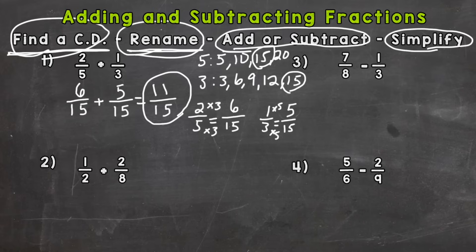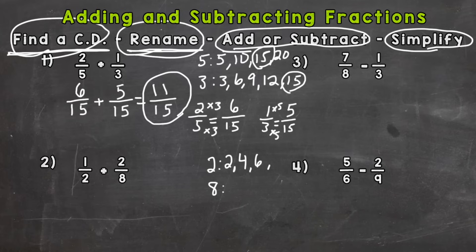That seems like a lot of steps for a simple addition problem, but with practice these go much quicker. Number two: one half plus two eighths. Our denominators are not the same, so we need to find a common denominator. Listing multiples of two: two, four, six, eight. For eight we start with eight — and we already have a match. Our least common multiple is eight.